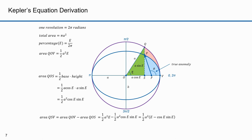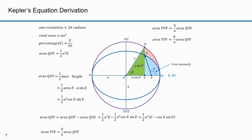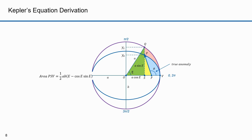Now we get rid of the little curved section between the ellipse and the circle. Recall that the area of POV is B over A times the area of QOV. The area of PSV is thus B over A times the area of QSV. We know QSV is one half A² times (E minus cosine E sine E), so substituting gives PSV equals one half AB times (E minus cosine E sine E).